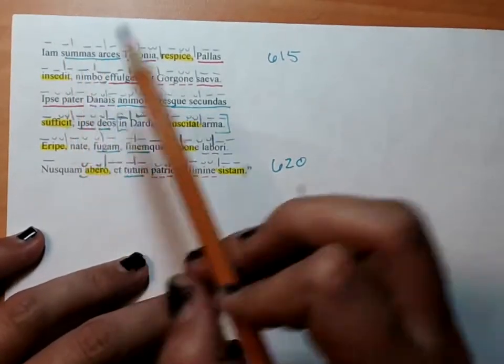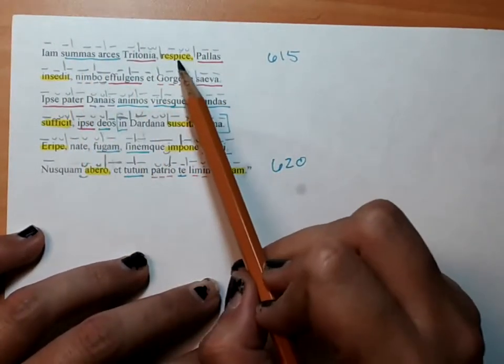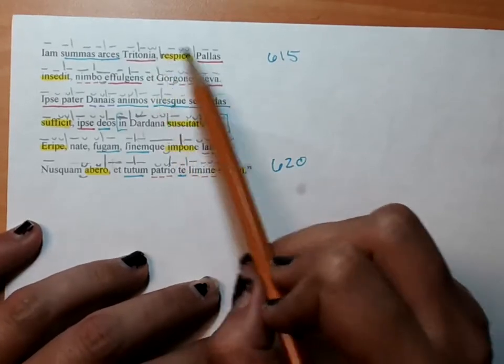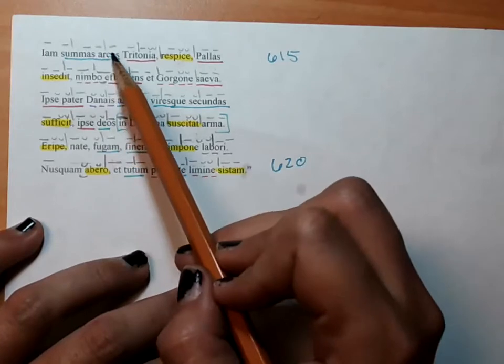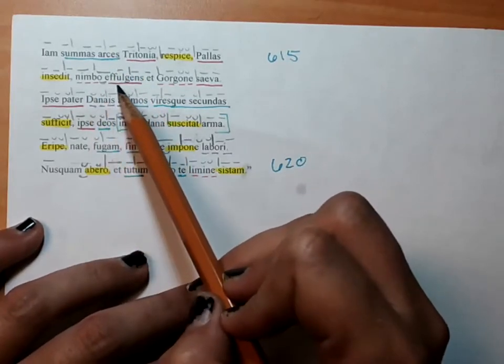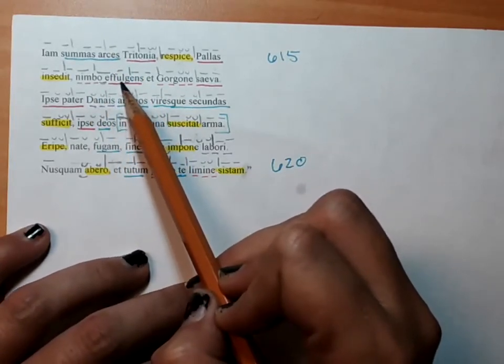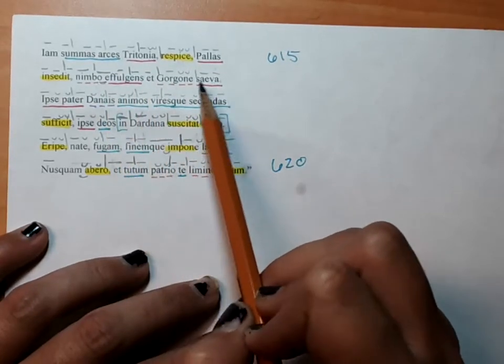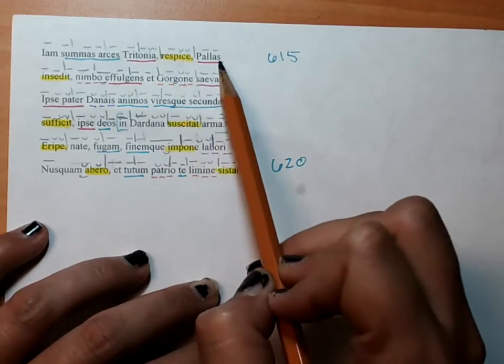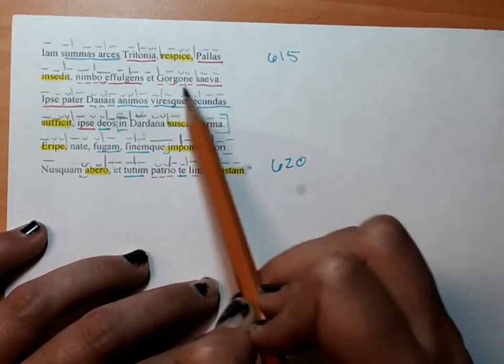Now, look, look around, right? And yes, Tritonian palace sits on the highest citadels and shining by means of a cloud and savage with the Gorgon, because the palace is Athena and her shield has the Gorgon.